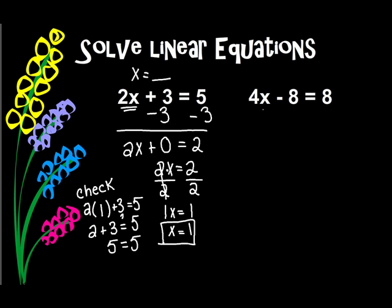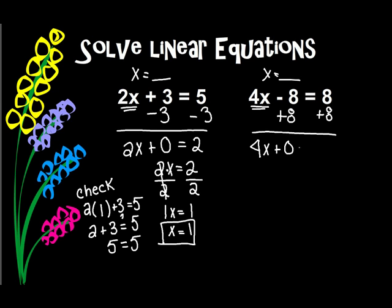Let's look at the next one. The same rule applies — I want to get x by itself, I want x equal to something. Now, if I see subtract 8, I want to do the opposite of subtracting, which is adding. Remember, I need to do that to both sides of the equal sign to keep it balanced. When I add down, I get 4x plus 0 equals 16. Well, 4x plus 0 is the same thing as 4x equals 16.